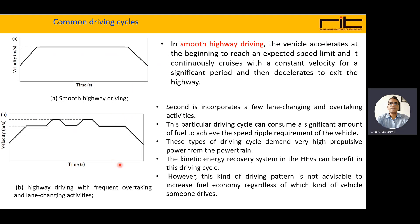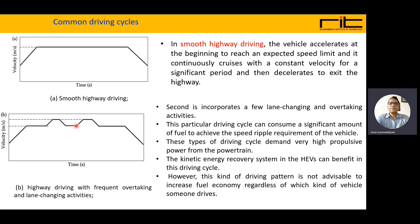Another cycle is highway driving with frequent overtaking and lane change activities. Initially the vehicle accelerates, then goes with a constant speed. For lane changing, it accelerates again, reaches a constant speed, then decelerates and moves to another lane, returning to constant speed. Further lane changes involve accelerating and decelerating back to normal constant speed. This is the frequent overtaking and lane-changing pattern of acceleration, deceleration, and smooth driving.